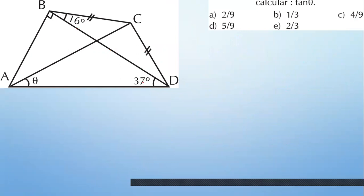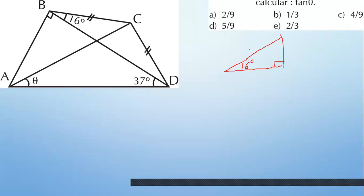El siguiente problema tiene un poco más de pasos. ¿Qué tienes aquí? 37 grados. Eso es un notable. 16 grados también es un notable. Los voy a poner aquí para que no los olvides. ¿Qué hay de especial de estos triángulos? Que son aproximados. Para el de 37 y 53: 25, 7, 24. Puedes comprobar por Pitágoras: 24 al cuadrado más 7 al cuadrado igual a 25 al cuadrado.